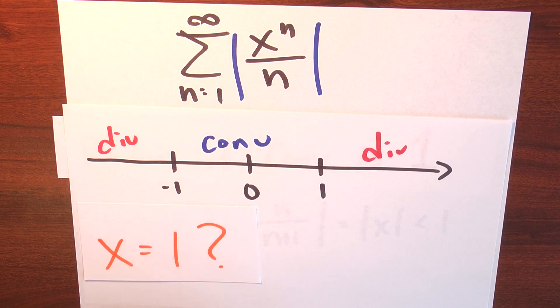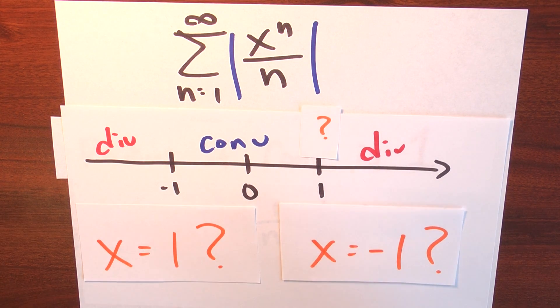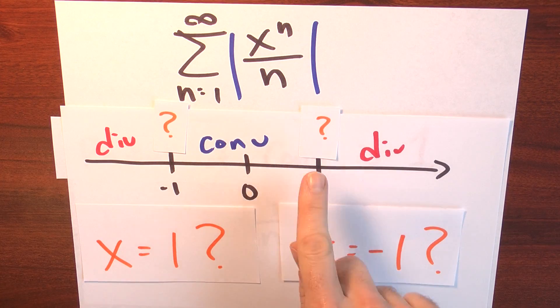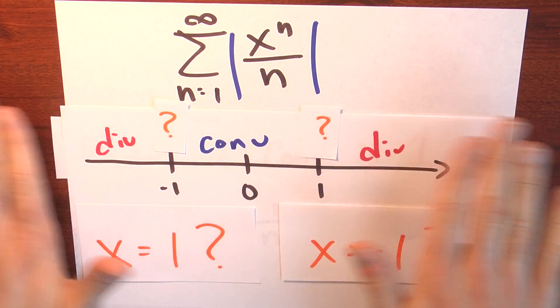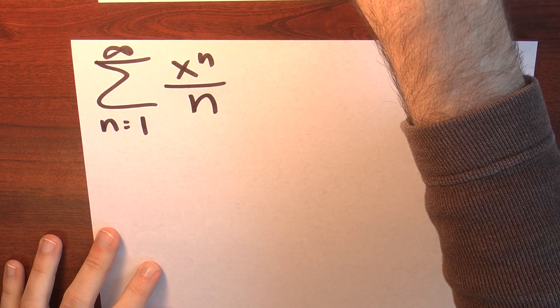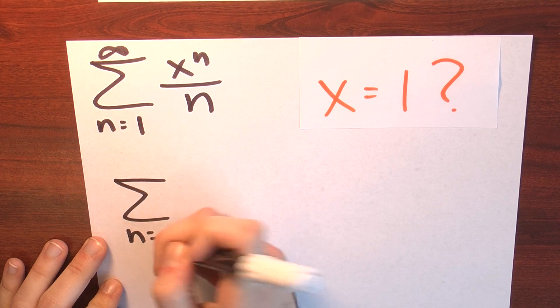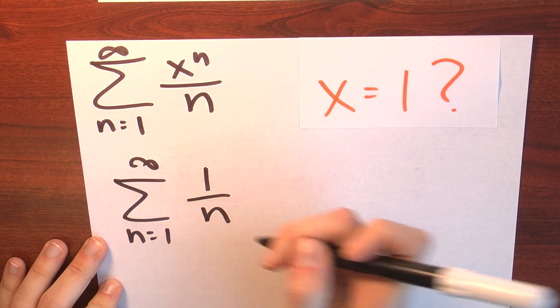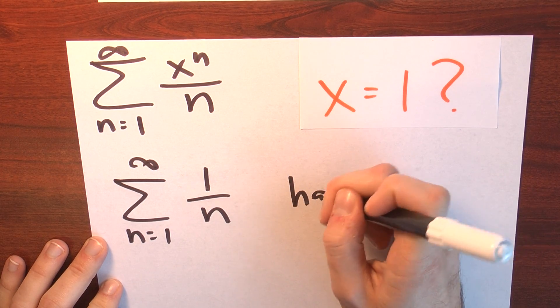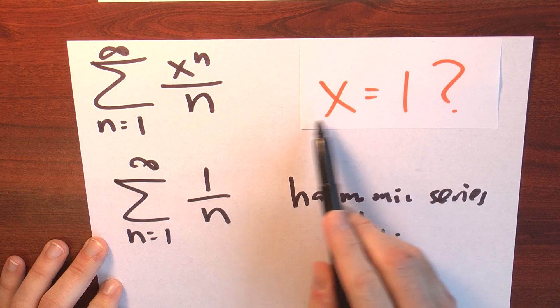Does the series converge or diverge at x equals 1? Does it converge or diverge at x equals minus 1? All I know so far is that it converges absolutely between minus 1 and 1, and diverges outside. I haven't addressed whether it converges at the endpoints. If we plug in x equals 1, the series becomes the sum from n equals 1 to infinity of 1 over n — that's the harmonic series, and the harmonic series diverges. So this series diverges when x equals 1.